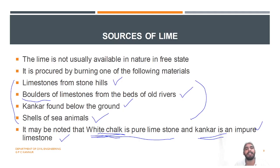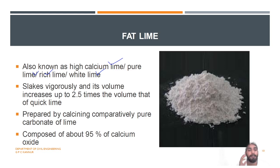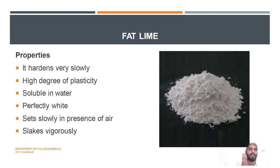Compared to the quicklime, fat lime is composed of 95% calcium oxide. Properties of fat lime: it hardens very slowly, has a high degree of plasticity, is soluble in water, and sets slowly in the presence of air. It slakes vigorously — volume increases up to 2.5 times. Uses of fat lime: whitewashing and plaster work.